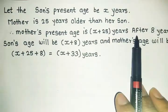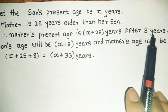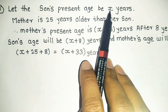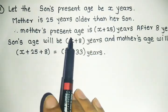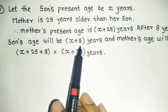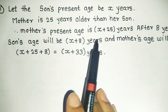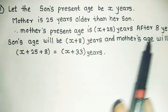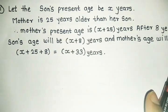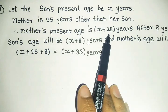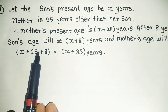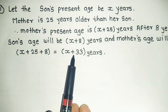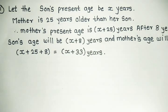Mother's present age is x plus 25 years. Next condition, after 8 years, son's age will be x plus 8. Currently it's x years. After 8 years, we add 8 years, so x plus 8 years will be the son's age. And mother's age will be x plus 25 currently. After 8 years, we add 8 to this as well. So x plus 25 plus 8 equals x plus 33 years.